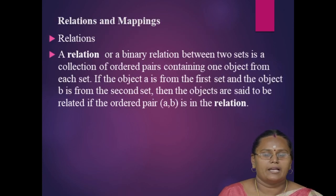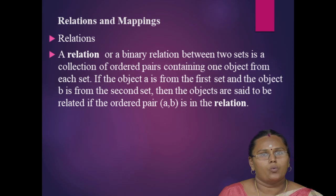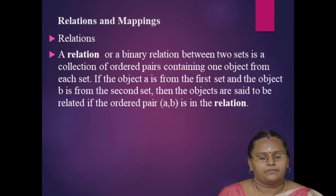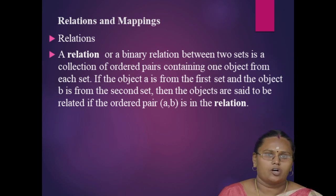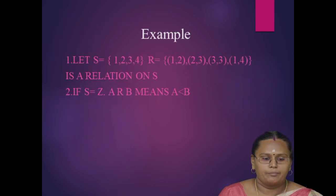A relation, or a binary relation between two sets, is a collection of ordered pairs containing one object from each set. If object A is from the first set and object B is from the second set, then the objects are said to be related if the ordered pair (A, B) is in the relation.